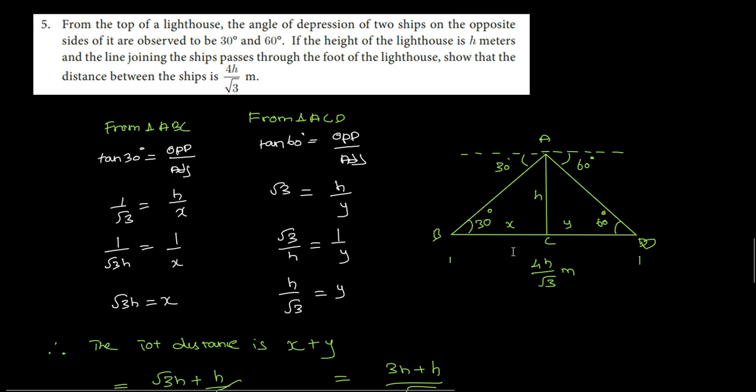So H is the opposite side, X is the adjacent side. Tan 30 value is 1 by root 3 equals H by X. So reciprocate here, root 3H equals X. So the distance BC is root 3H.